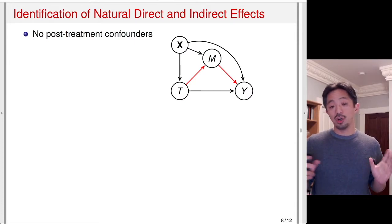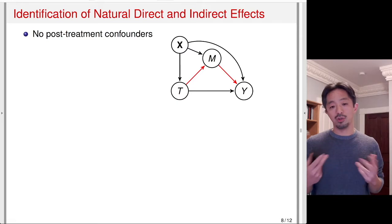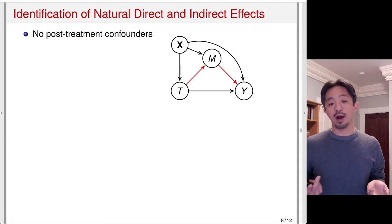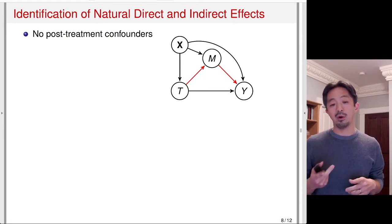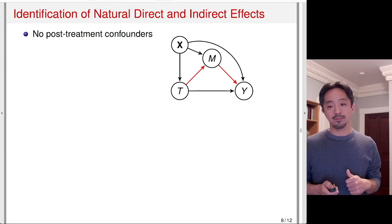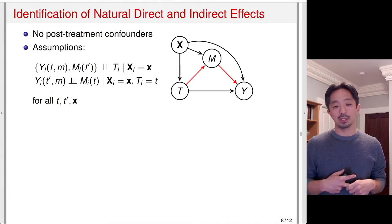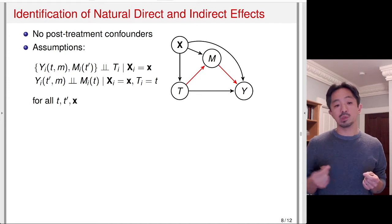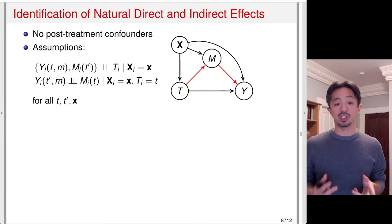Under the assumption of no post-treatment confounder, what do you need to assume in order to identify the natural indirect effects, and hence also the natural direct effects? The red arrows represent the natural indirect effect. We have two conditional independence assumptions like before, but the content is a little different. The first one is actually identical: conditional on the pretreatment covariates X, the treatment is independent of potential outcomes as well as potential values of the mediator. This is again satisfied if the treatment is randomized.